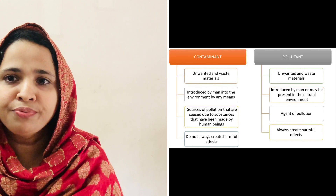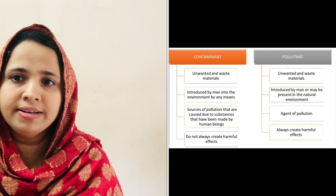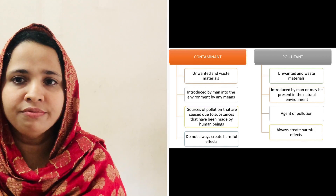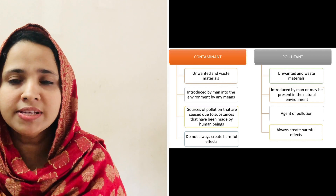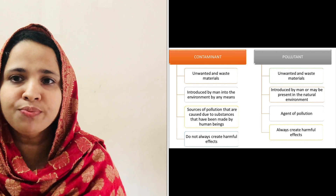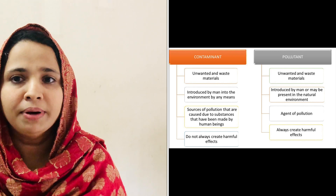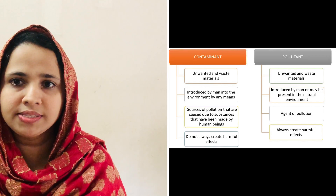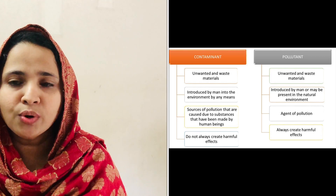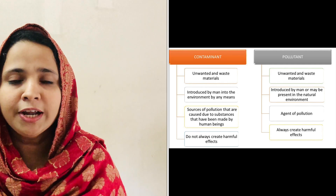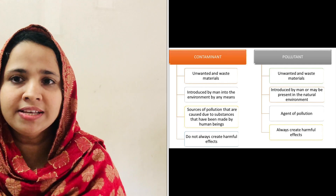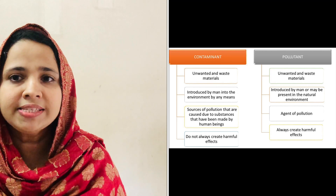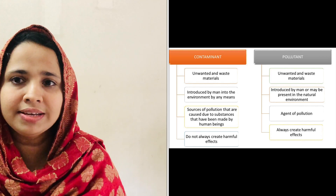Next we can differentiate two terms: contaminant and pollutant. Both are unwanted waste materials. The contaminant is introduced into the atmosphere by man, but the pollutant is introduced by man or by natural process. The pollutants are the agents of pollution. Contaminants don't always create harmful effects, but pollutants always create harmful effects. These are the differences between contaminant and pollutant.